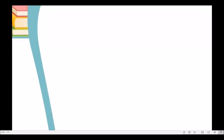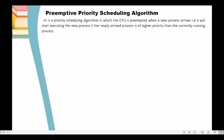Hi everyone, welcome to the computation of average turnaround time and average waiting time using preemptive priority scheduling algorithm. When we say preemptive priority scheduling algorithm, it is a priority scheduling algorithm in which the CPU is preempted when a new process arrives — that is, it will start executing the new process if the newly arrived process is of higher priority than the currently running process.